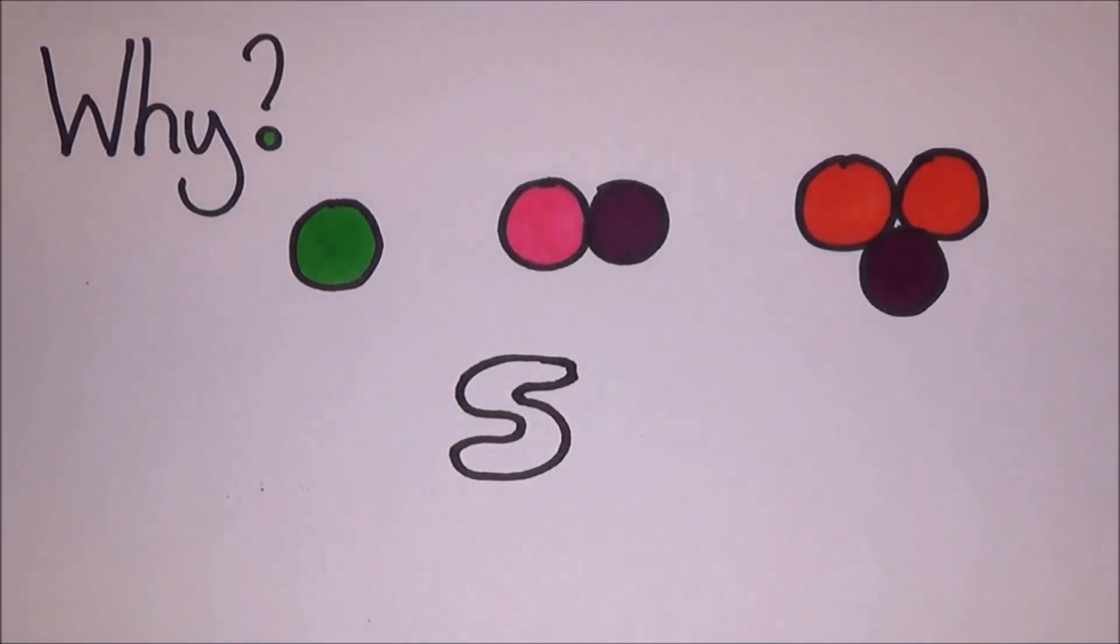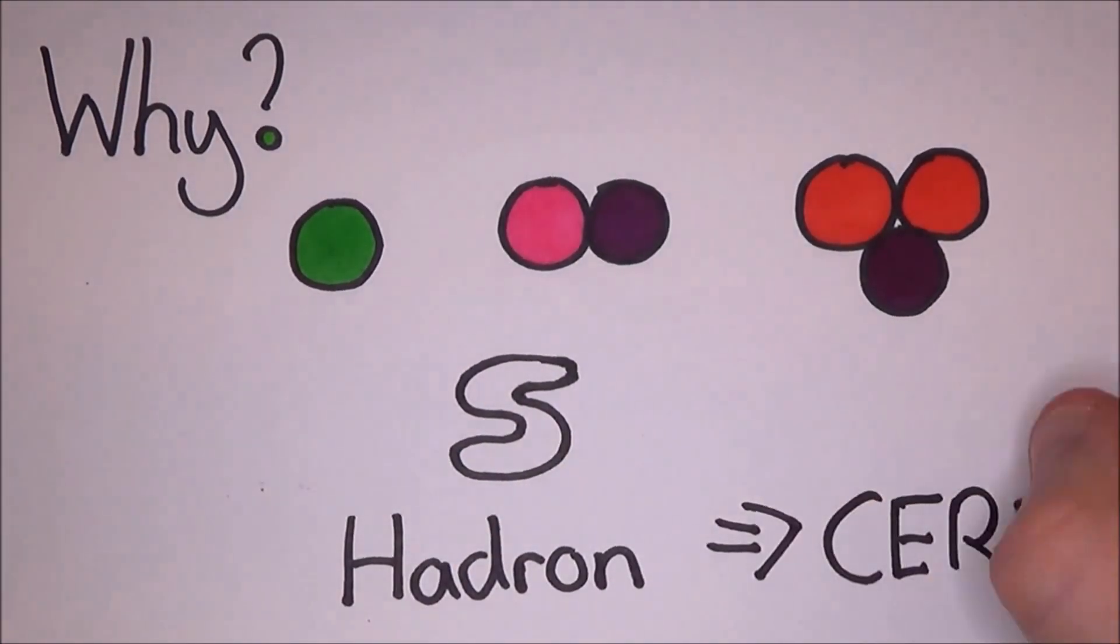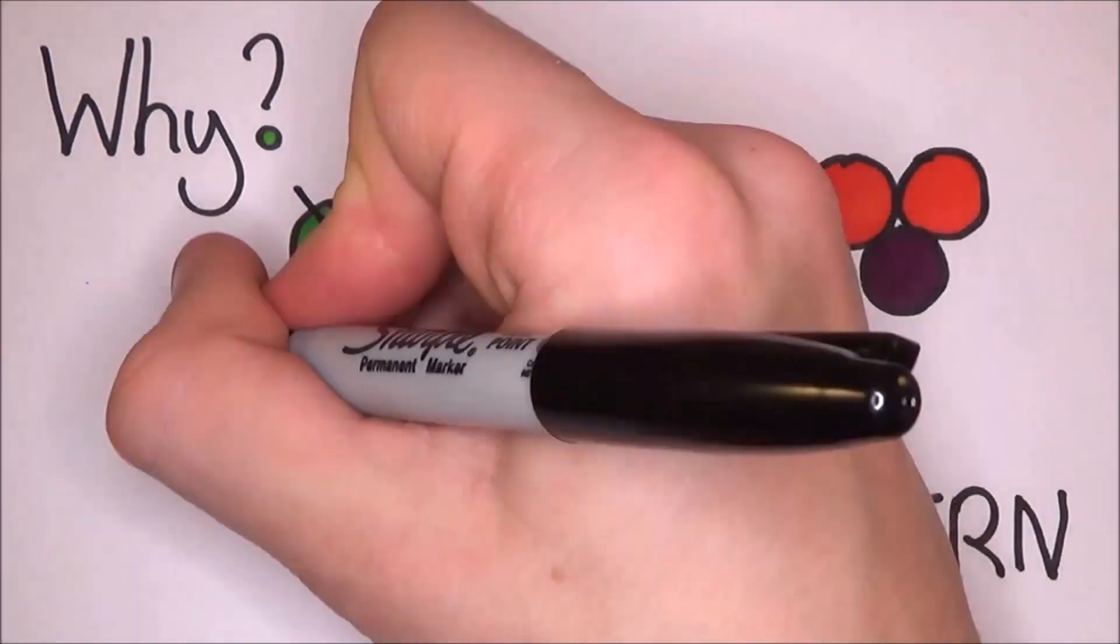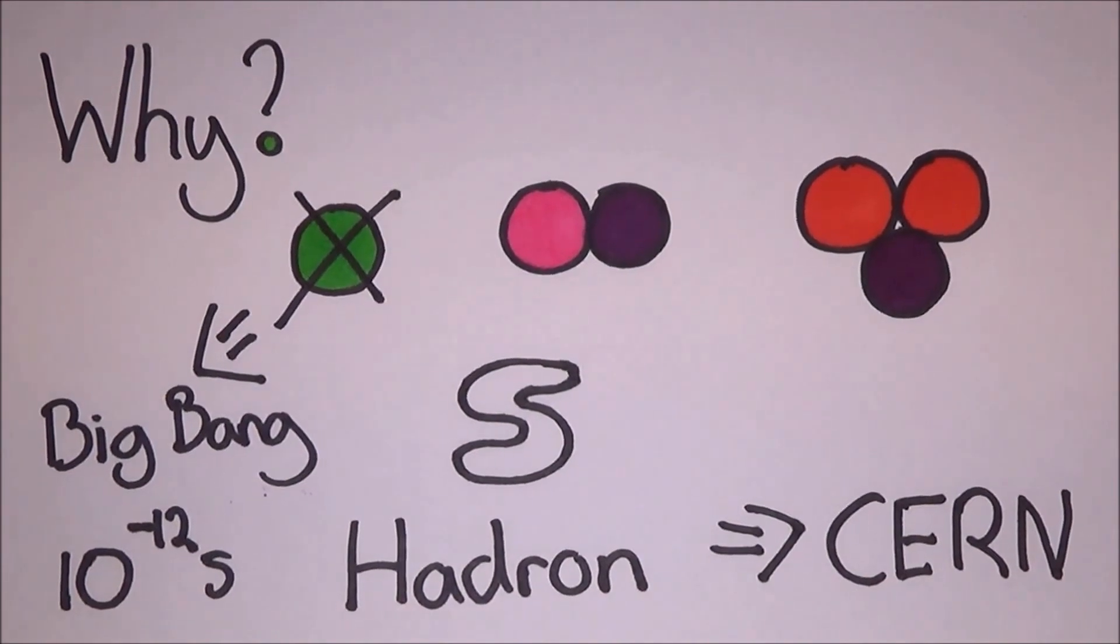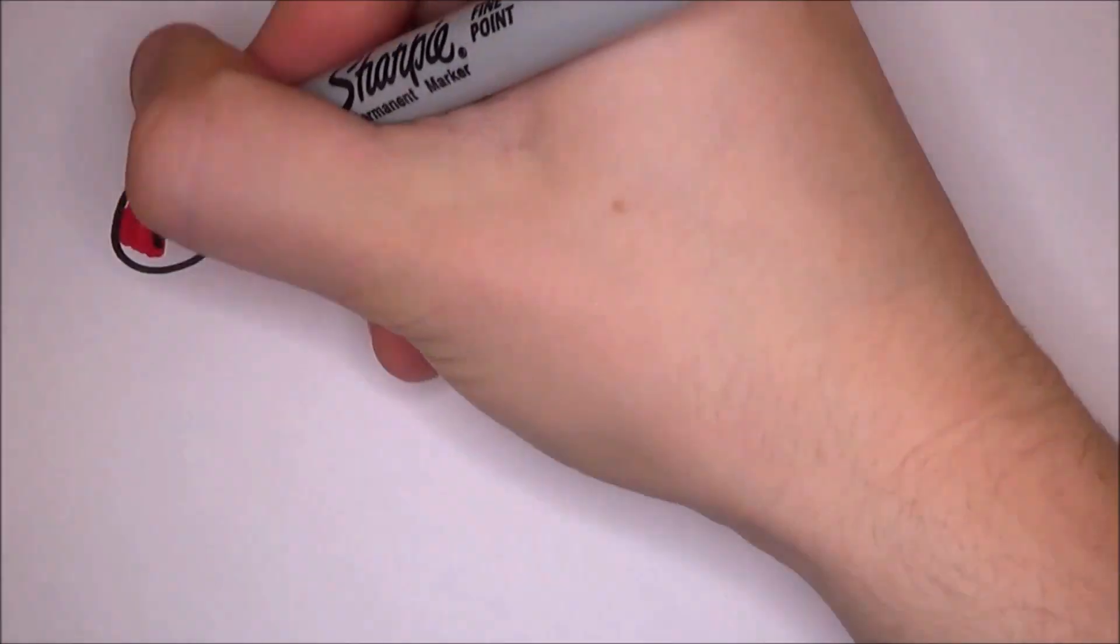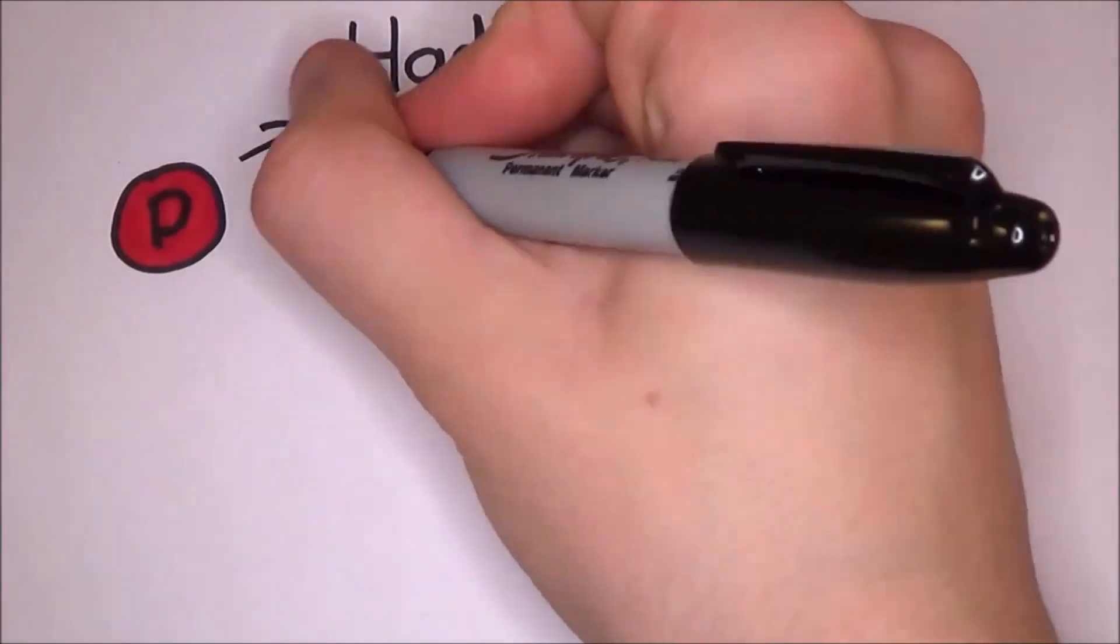Quarks are held together by the strong nuclear force, and when they are together, they are known as hadrons. You know, from the Large Hadron Collider at CERN. You might remember from the Big Bang video that there was a time when quarks could exist on their own, but that was like 10 to the minus 12 seconds. Hadrons make up most of the composite particles, and both protons and neutrons are hadrons.